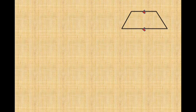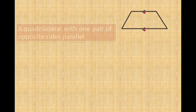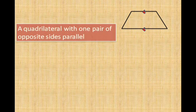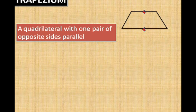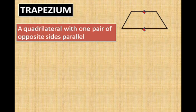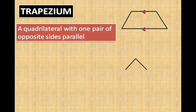Look at this quadrilateral — one pair of opposite sides are parallel. Such a quadrilateral is called a trapezium.